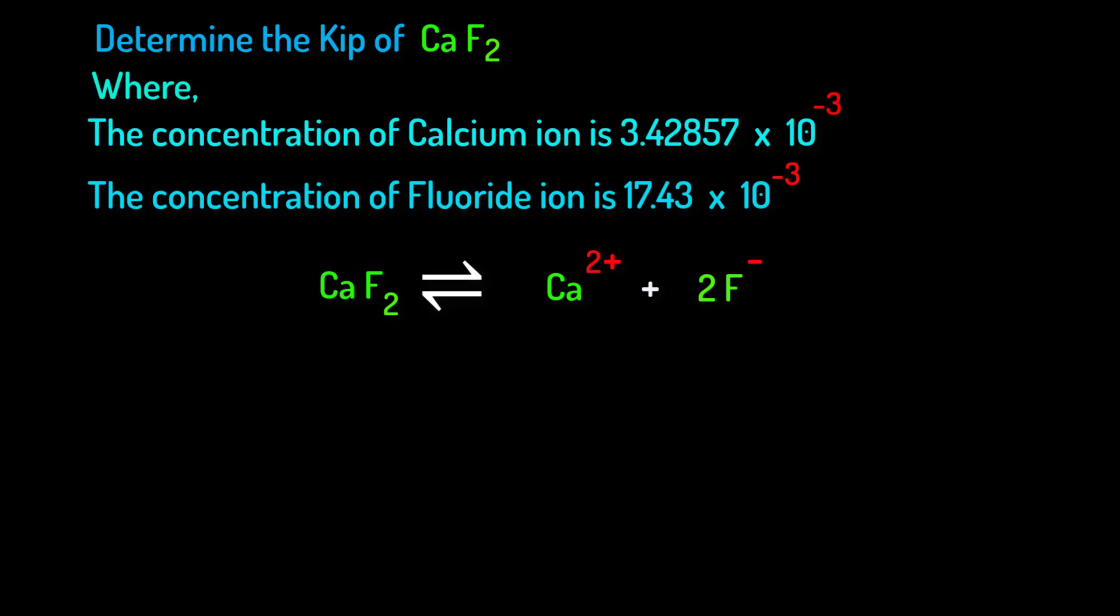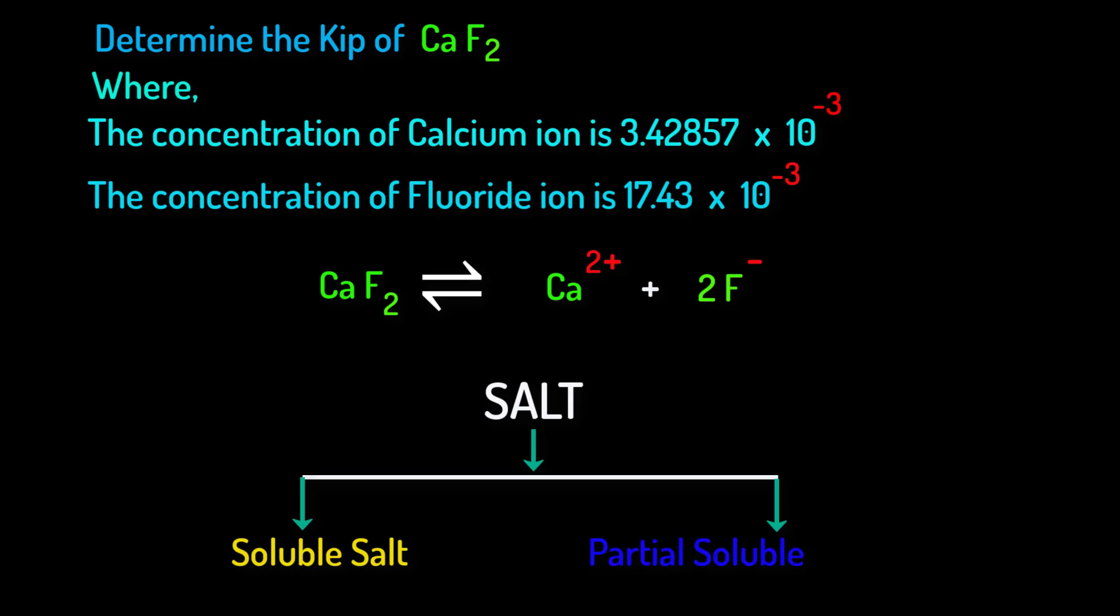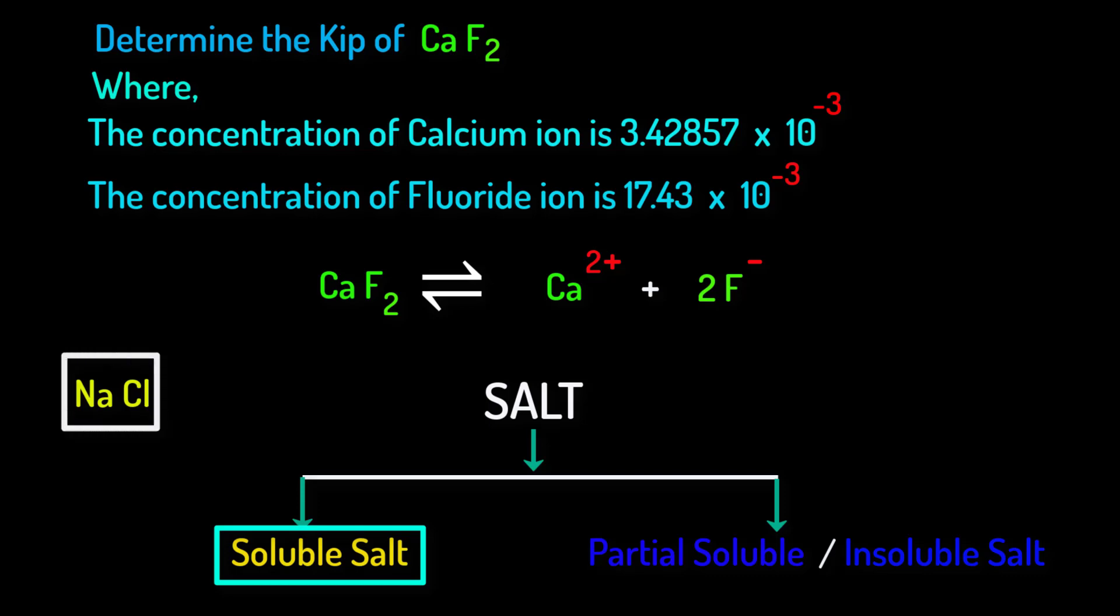Note that salt is of two types. One is soluble salt and the other is partial soluble or insoluble salt. For soluble salts we use this one sided arrow. Because soluble salts dissolve completely and easily in water and never become reactant again. For example of soluble salt we can think about sodium chloride. We dissociate sodium chloride by using only one sided arrow like this.